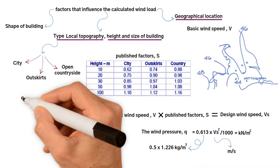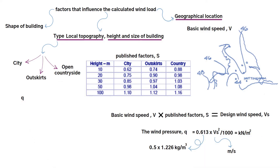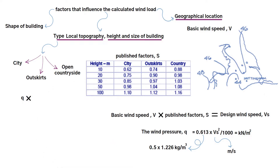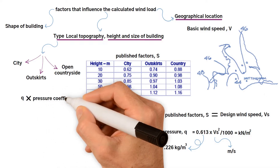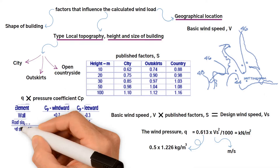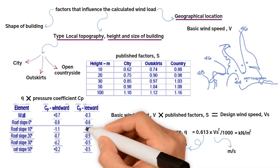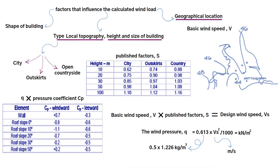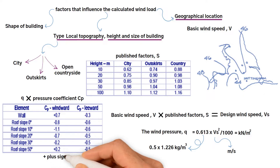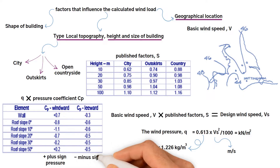This load is then applied to the building's surfaces after being multiplied by a pressure coefficient that takes into account the shape of the building. Plus signs indicate that the wind is causing pressure on the element, and minus signs indicate suction.